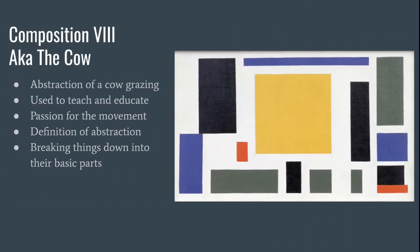The next piece is Composition 8, also called The Cow. He called it this because it's supposed to look like an abstracted version of a grazing cow. This piece was originally distributed to teach others about the De Stijl movement, and it's one of his first pieces for the movement, showing his passion for it from early on. The painting is sometimes referred to as the definition of abstraction because he simplified and broke down a living animal into its most basic shapes and colors.